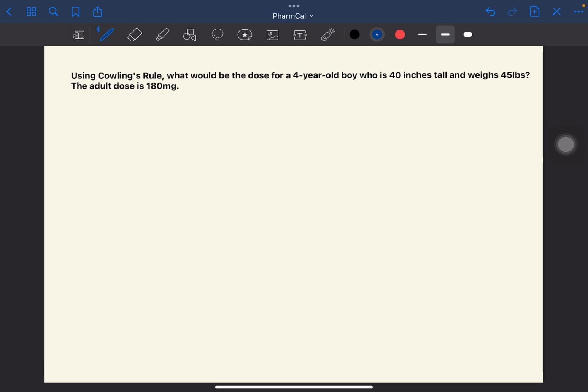Using Cowling's rule, what would be the dose for a 4-year-old boy who is 40 inches tall and weighs 45 pounds? The adult dose is 180. Remember Cowling's rule: it will be the age next birthday in years over 24 times the adult dose. This will make it 5 over 24 times 180. Again, although height and weight are given, they will not be used when asked to use Cowling's rule. So 5 over 24 times 180, the dose for this 4-year-old boy will be 37.5 mg.